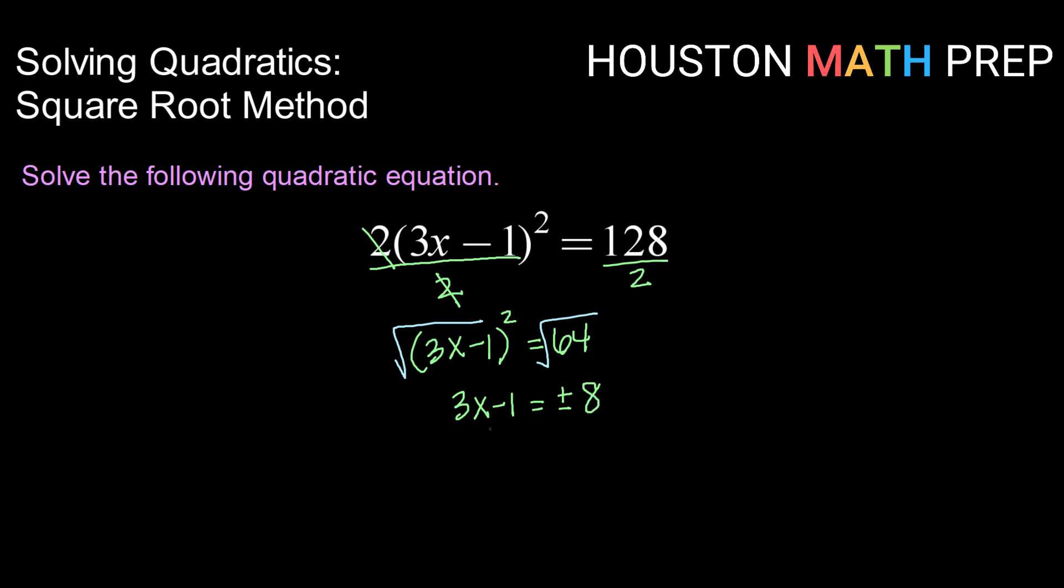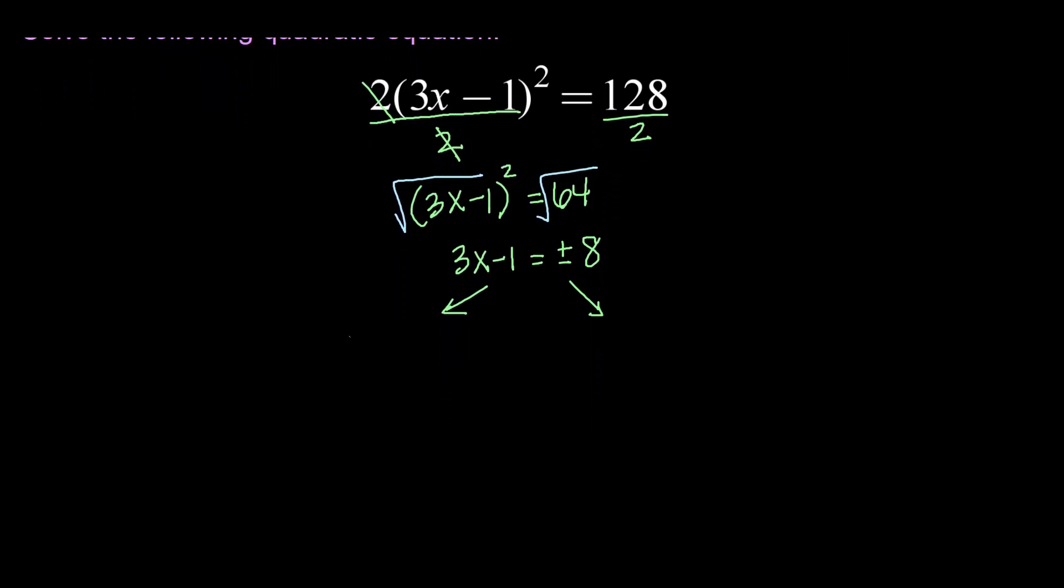Now I want to split this into two separate equations, one for the positive and one for the negative, so that I can solve for x. My first equation will be 3x minus 1 equals 8 and my second will be 3x minus 1 equals negative 8.